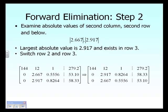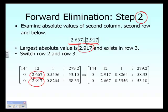For the second step of forward elimination, we again check absolute values before eliminating. Since we are at step two, we look at the second column from the second row downward. The absolute value is 2.667 in row two and 2.917 in row three. The maximum, 2.917, exists in row three, so we switch row three with row two.